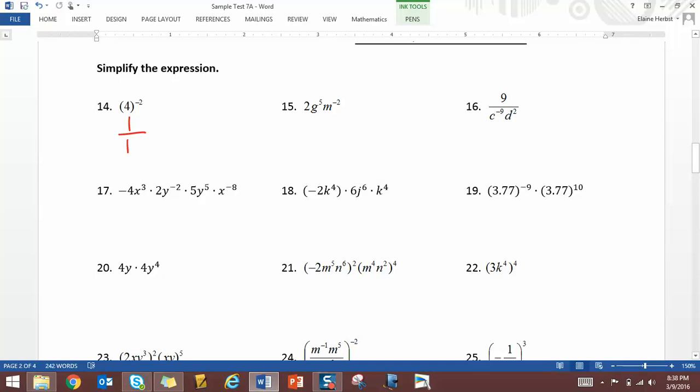This is 1 over 16. 2g to the fifth over m squared. 9c to the ninth over d squared.